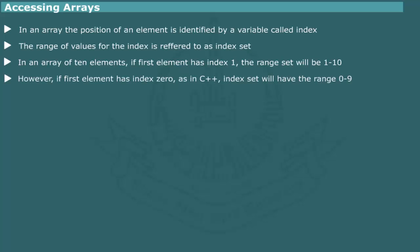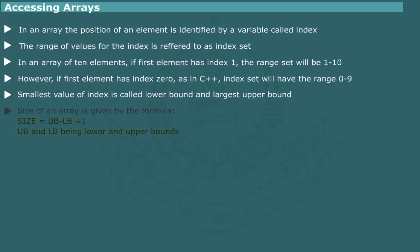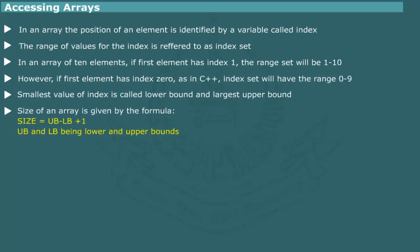Sometimes, the first element of array is counted as the zeroth element. In this case, the index set would have range from 0 to 9. The smallest value of index is called lower bound and the largest value is called upper bound. Thus, the size of an array is given by the relation.